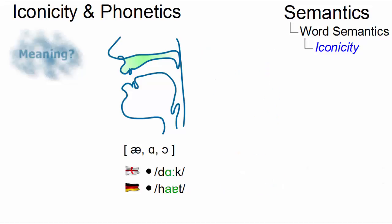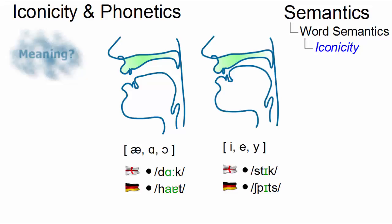Furthermore, open vowels are also more likely to be associated with round shapes and dark or gloomy moods like dark or German hart, whereas close vowel sounds are more likely to be associated with pointed shapes and happy moods like stick or German spitz.